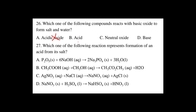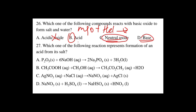Basic oxide plus acid gives salt plus water. For example, magnesium oxide (MgO) plus HCl gives magnesium chloride plus H2O. The correct answer is B. Neutral oxide does not react with a basic oxide — no reaction occurs.